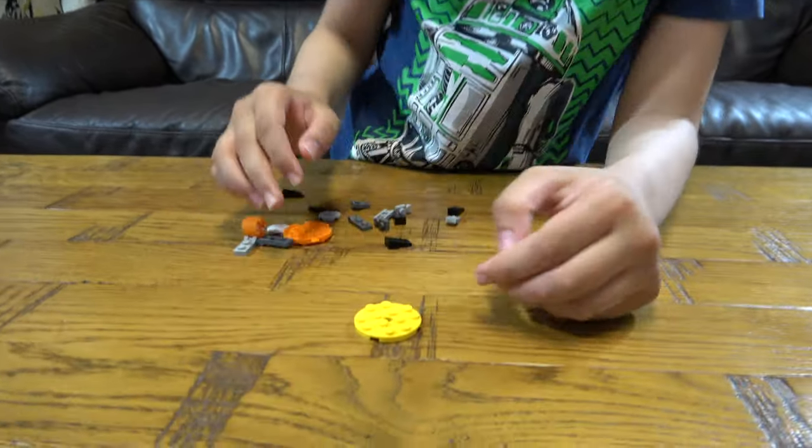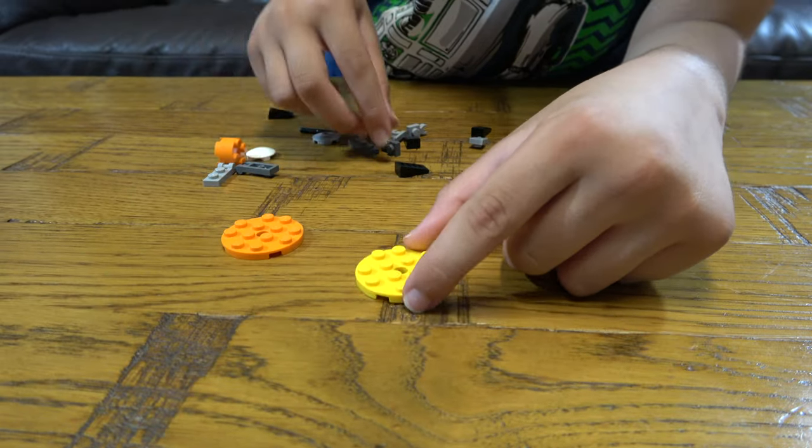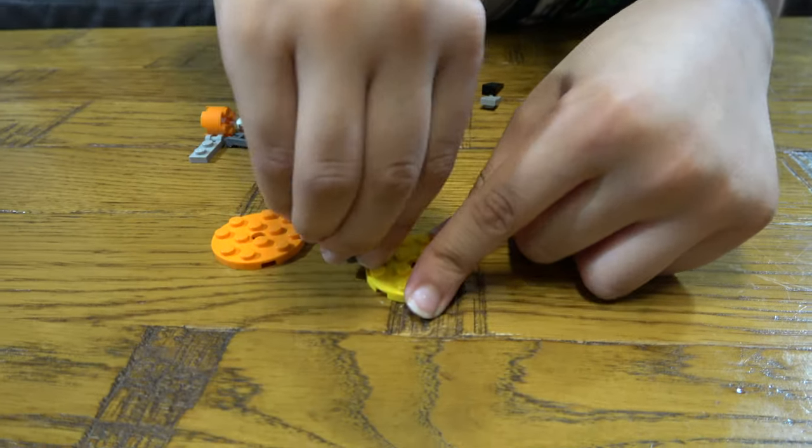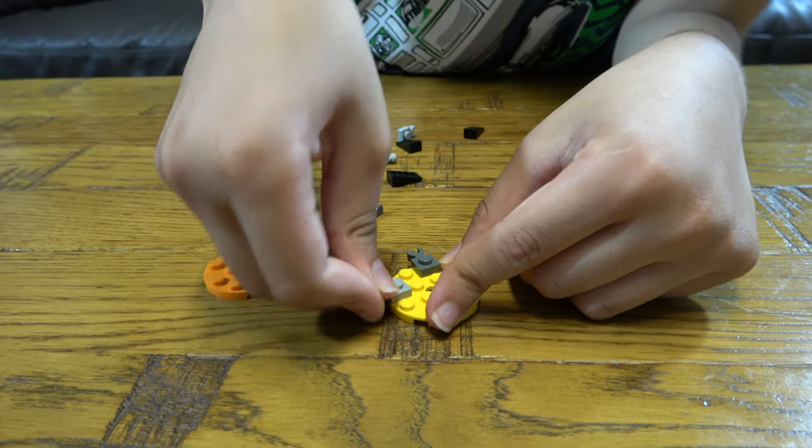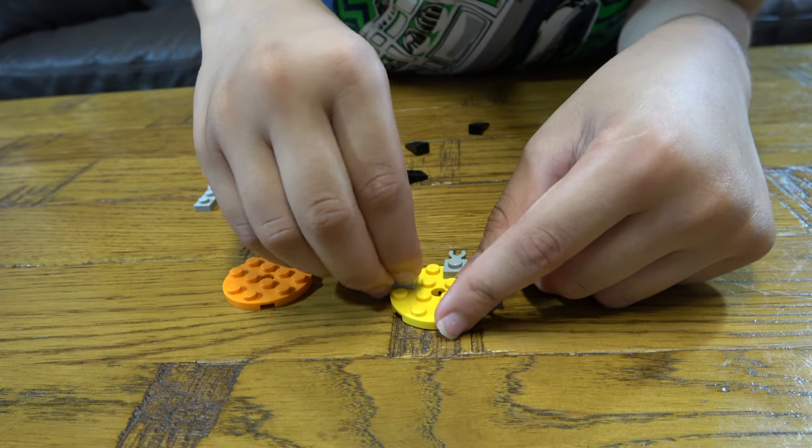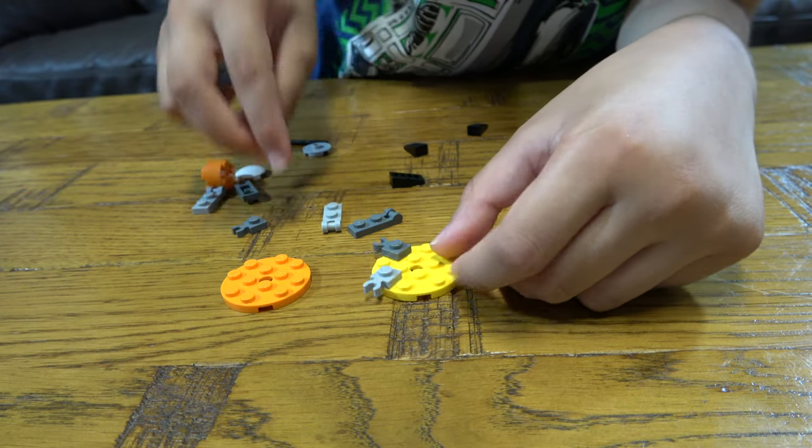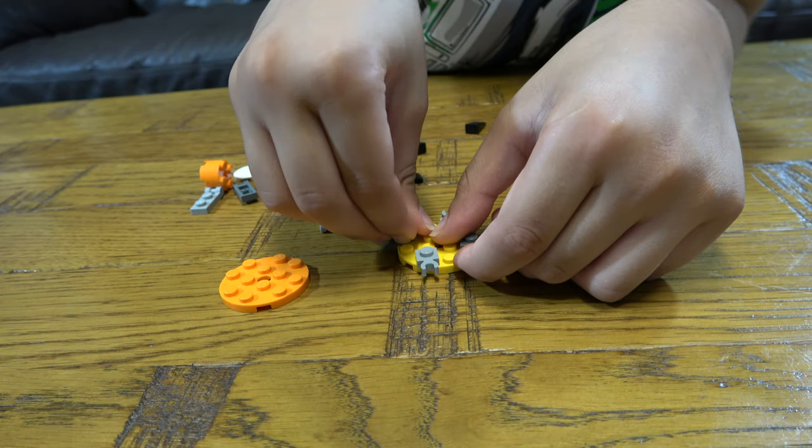First thing you're going to need is this. Then you're going to get four of these. You're going to place one here, one there, one here. I'm going the wrong way. One there, one here, finally one here.